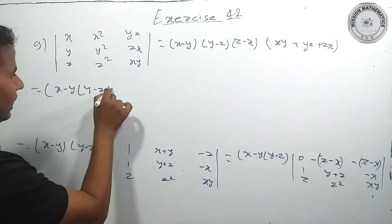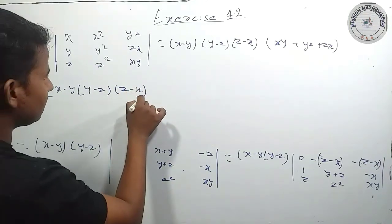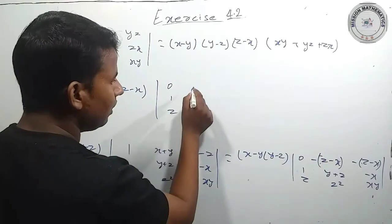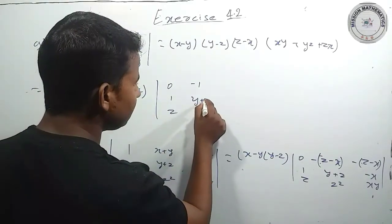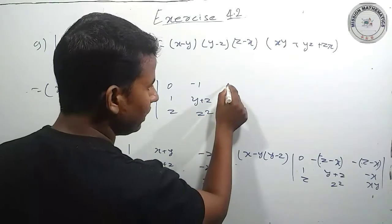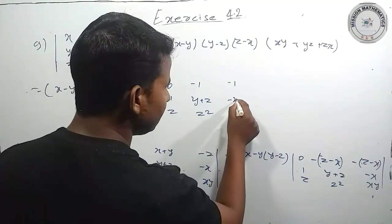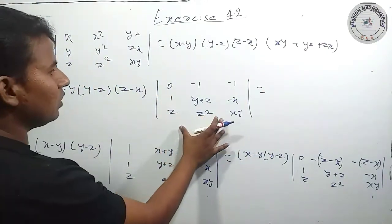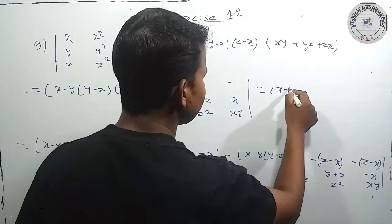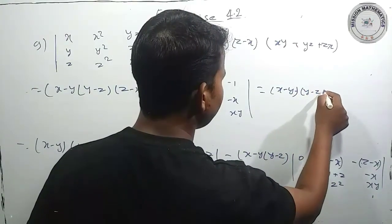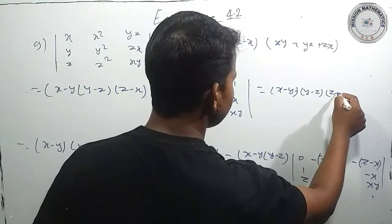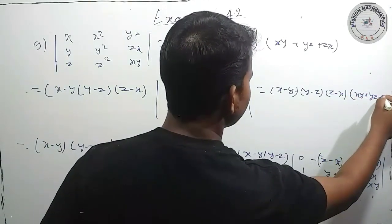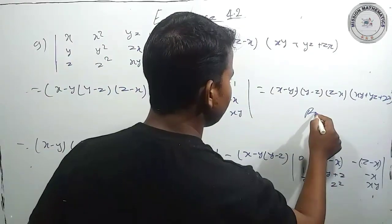Minus of z minus x को बाहर common करेंगे तो x minus y into y minus z into z minus x हो जाएगा। Simply यहां पे क्या रह जाएगा: 0, 1, z और minus of 1, y plus z, z², and minus 1, minus x, xy. जब इसको expand करेंगे तो अपने पास आएगा x minus y into y minus z into z minus x into xy plus yz plus zx — यह proved हो जाएगा।